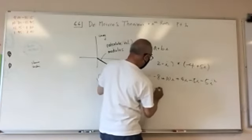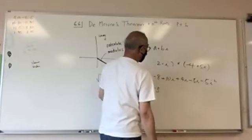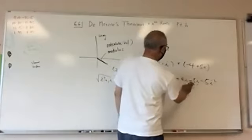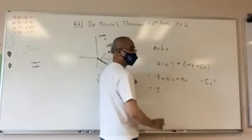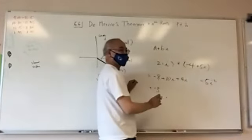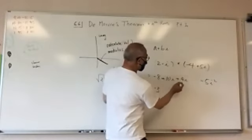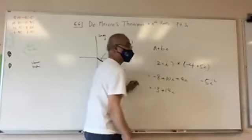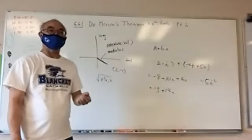And then you'd have negative three and ten — and we'd add these together, it would be 49. This is how you multiply. We did this in the previous chapter.